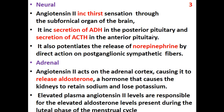Angiotensin 2 has effects on the adrenal glands — it acts on the adrenal cortex and causes the release of aldosterone, a hormone that causes the kidney to retain sodium and lose potassium. We have discussed aldosterone in the previous lecture. Elevated plasma angiotensin 2 levels are responsible for the elevated aldosterone levels present during the luteal phase of the menstrual cycle.